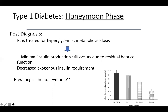The honeymoon phase is important because not all beta cells have died off — it may represent a critical window of opportunity to restore or preserve beta cell function. Some potential therapies include metformin, berberine, a low-carb diet, and different types of TZDs or GLP-1 agonists, which we'll talk about more coming up.